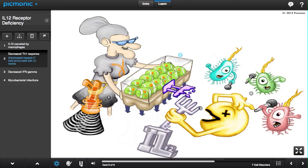Because the receptor is broken, there is a decreased Th1 response, portrayed by the tennis balls with the 1-wands trapped in the carton. The defected IL-12 receptor also results in decreased